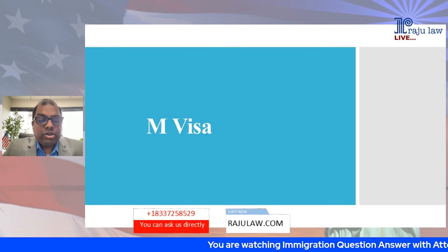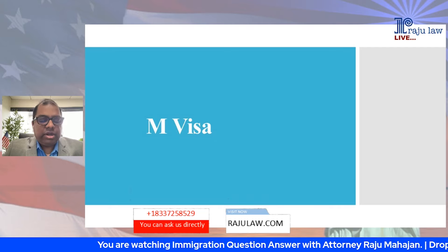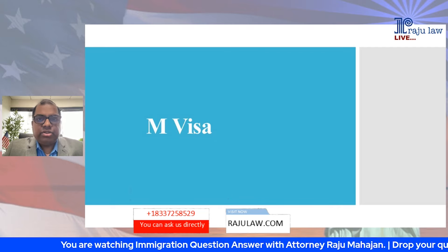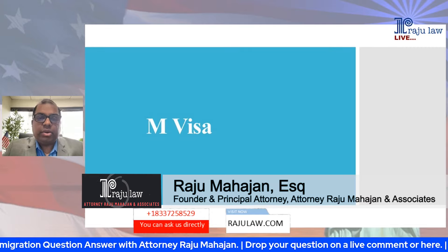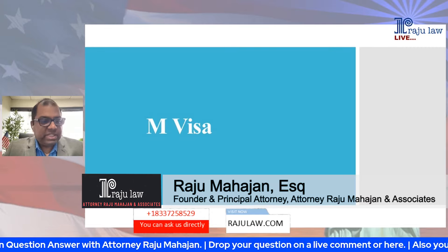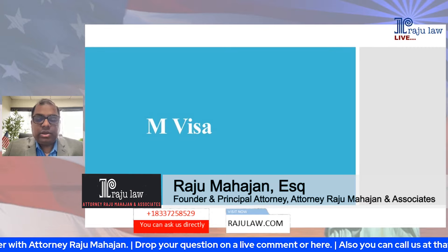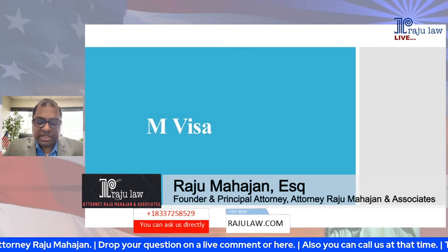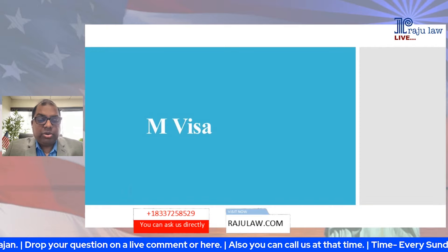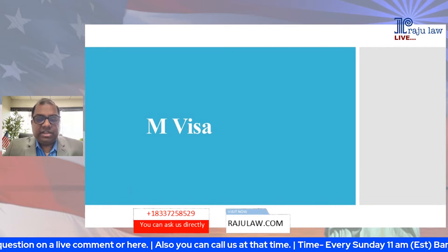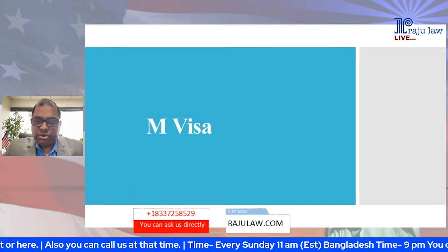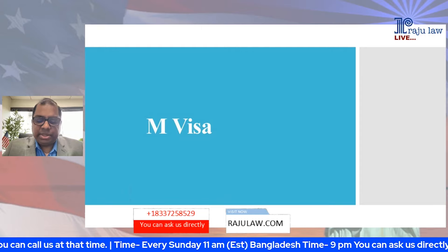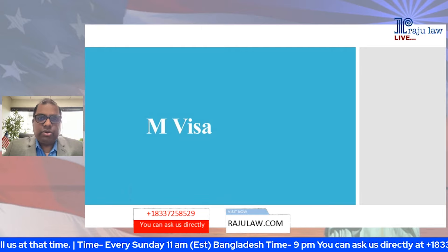Today we are going to talk about M visa. There are three major visa categories for international students coming to America: F visa, M visa, and J visa. Today we're going to talk about M visa, which is very significantly different from F visa. Many of you don't know about M visa, so this presentation will be very helpful.